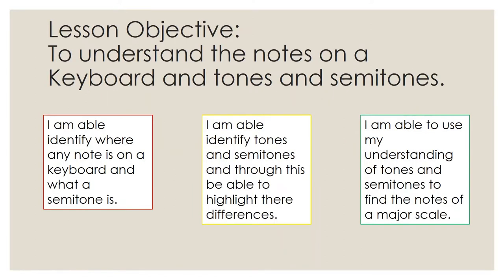Now, lesson objective: to understand the notes on a keyboard and tones and semitones. At a basic level, you are able to identify where any note is on a keyboard and identify what a semitone is. At a more able level, you are able to identify tones and semitones and see the differences between them. At the advanced level, you're able to use your understanding of tones and semitones to find the notes of a thing called the major scale. So whatever note you start at, you can work out the notes that make the major scale from that note.